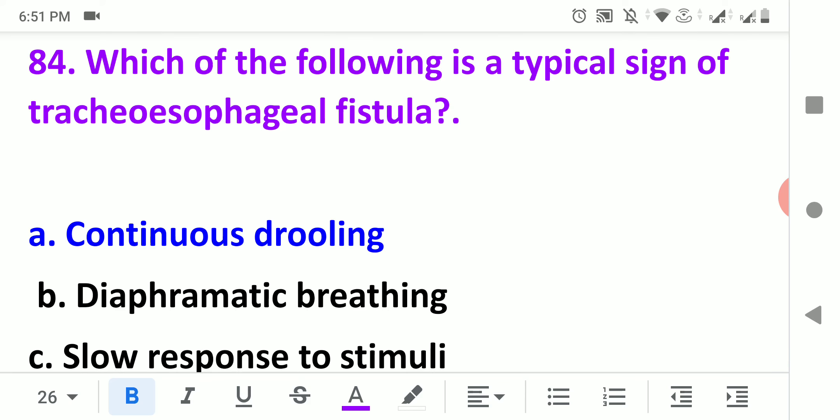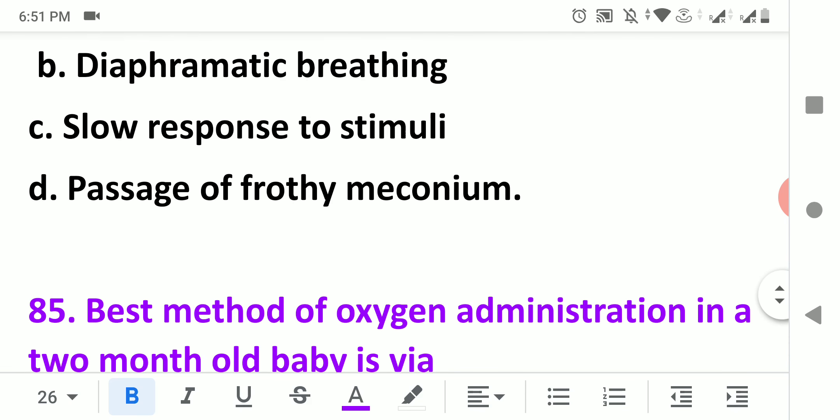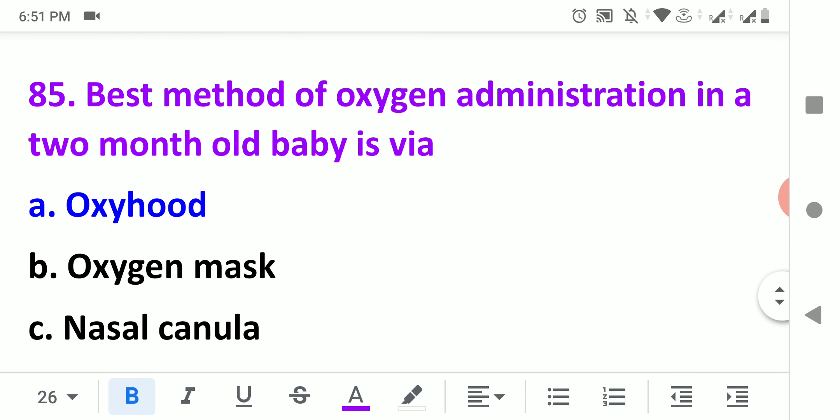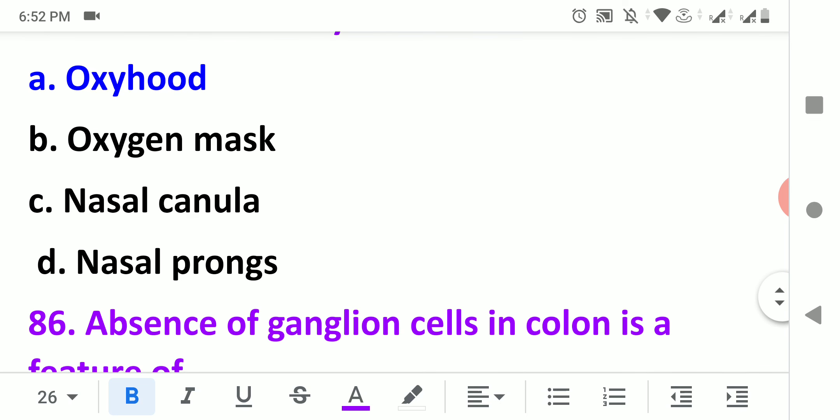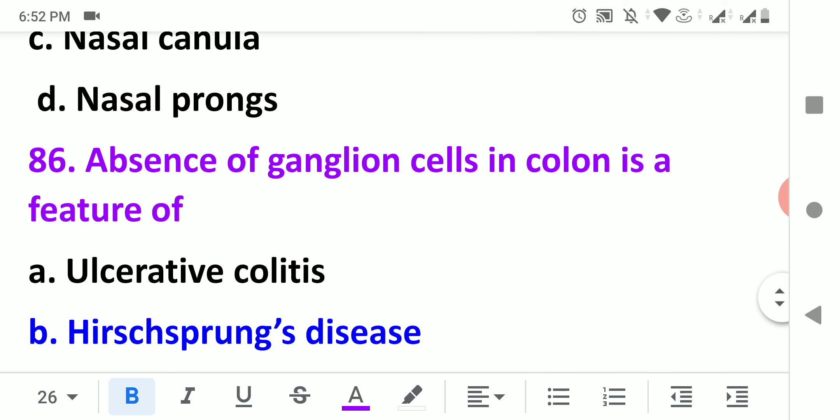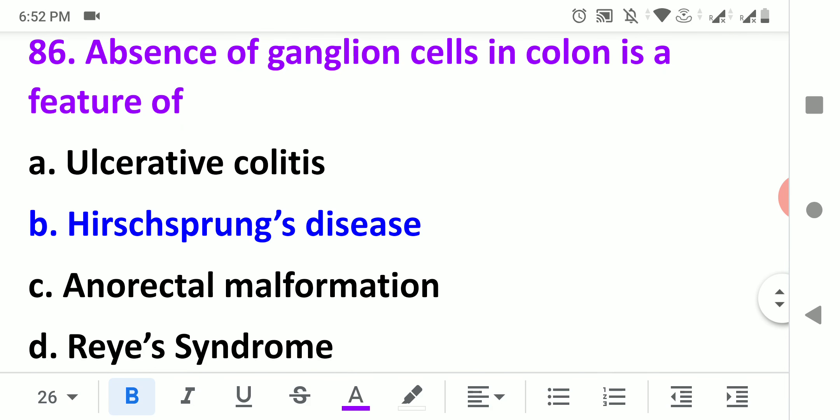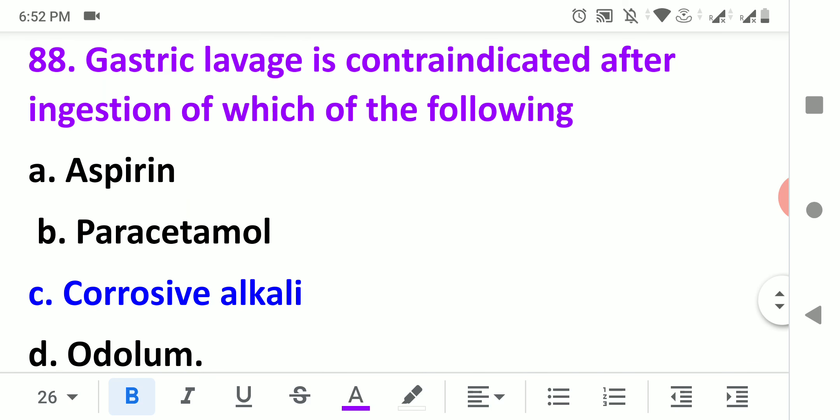Which of the following is a typical sign of tracheoesophageal fistula? Froth will be seen in the mouth continuously. Continuous drooling will be seen in tracheoesophageal fistula. Best method of oxygen administration in a two-month-old baby is oxygen hood.